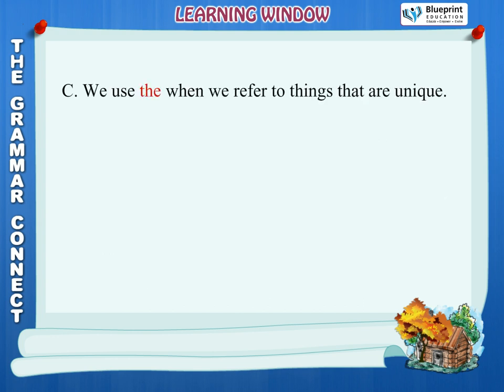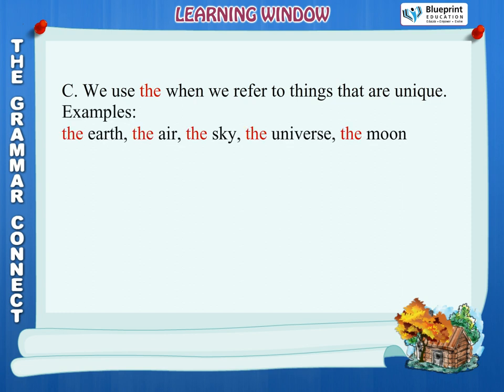Rule C: We use the when we refer to things that are unique. Examples: the earth, the air, the sky, the universe, the moon.